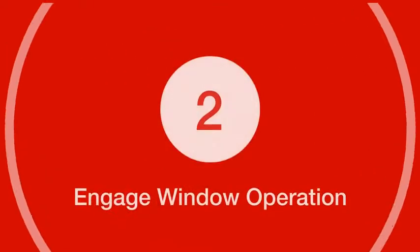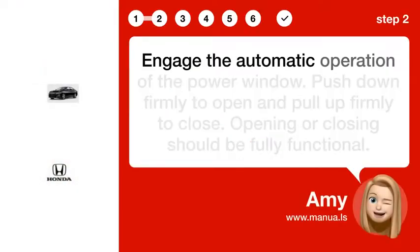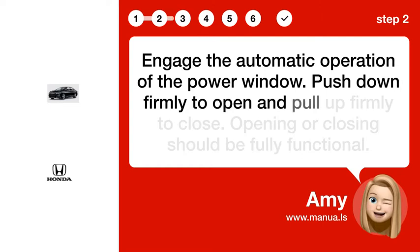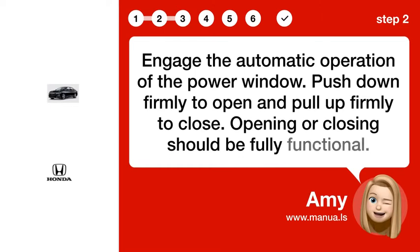Step 2: Engage window operation. Engage the automatic operation of the power window. Push down firmly to open and pull up firmly to close. Opening or closing should be fully functional.